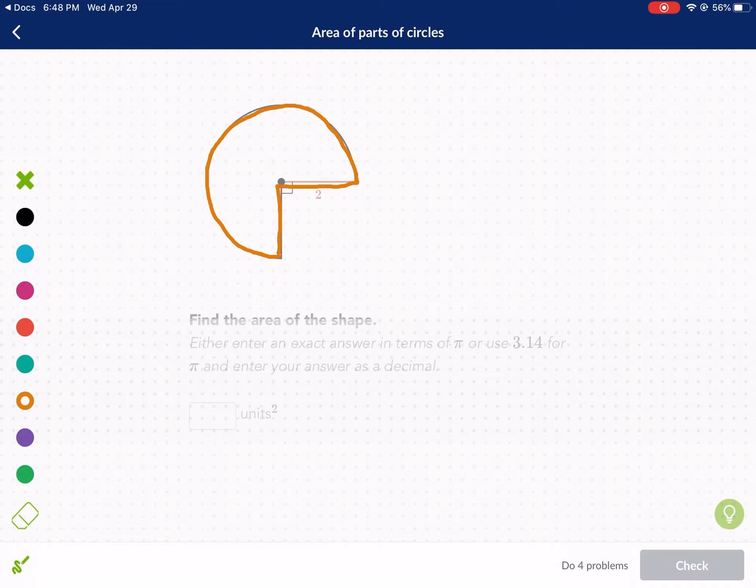If we were to find the area of a complete circle, we'd use the formula pi r squared and that would be its area. But we obviously can't do it here because it's got a chunk out.